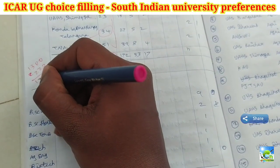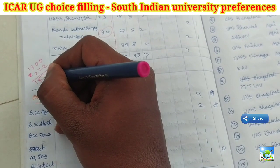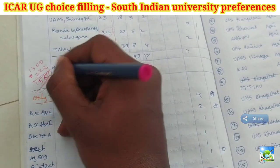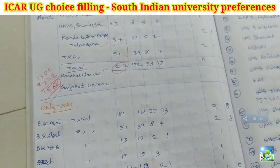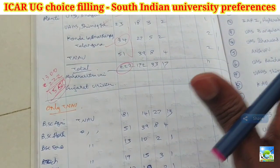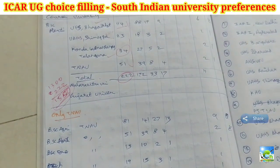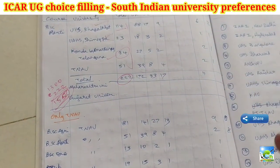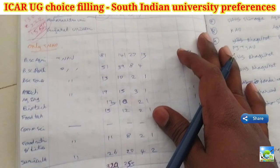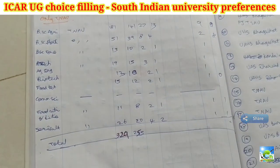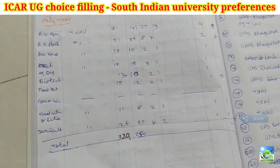For horticulture, including all four universities there are 222 seats. Combined with the 1300 agriculture seats, we are looking at around 1500 total seats. So if your rank is around 1500 or 2000, you will almost certainly get a seat.